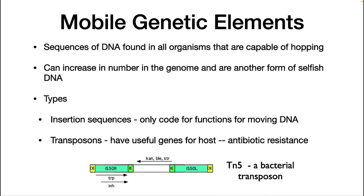We now move to another phenomenon that has important biological implications: mobile genetic elements. They also have uses in genetics research. Mobile genetic elements are sequences of DNA found in all organisms that are capable of hopping from one area of DNA to another. They can increase in number in the genome and are another form of selfish DNA. There are several different types. First, insertion sequences are mobile genetic elements that only code for functions for moving DNA. Second, transposons have all the functions of an insertion sequence but also have useful genes for the host — one example is antibiotic resistance, which is yet another way that bacteria can become resistant to antibiotics.